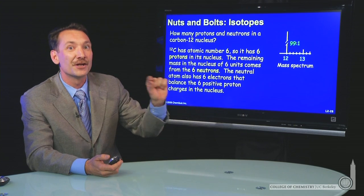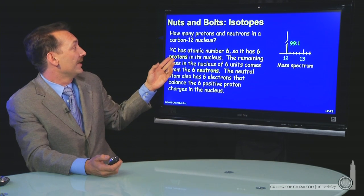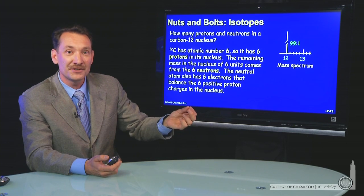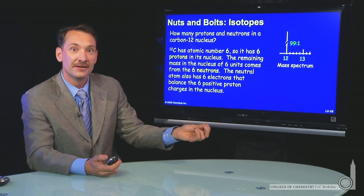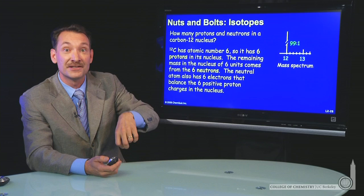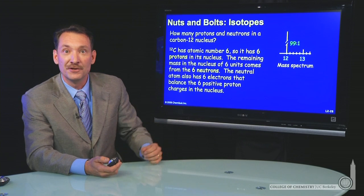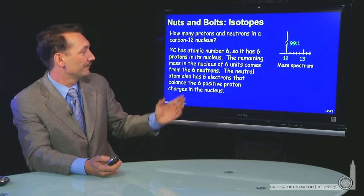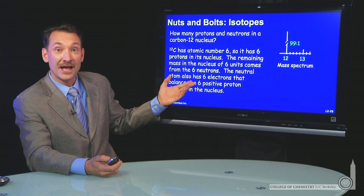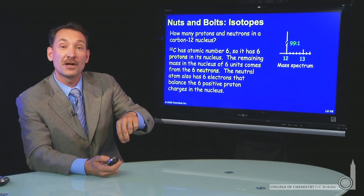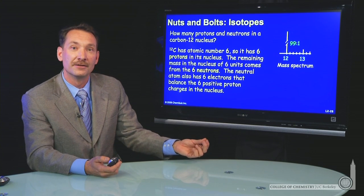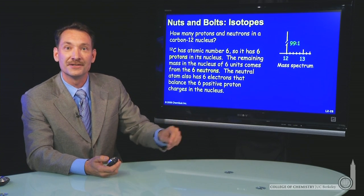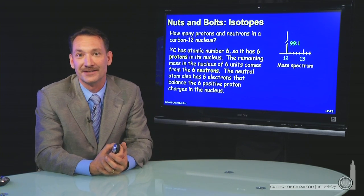Not the mass — the number of protons. Carbon-12 has mass 12, and with six protons accounting for six mass units, there are six more mass units, which must be the neutrons. So there are six neutrons in the carbon-12 nucleus. And if it's a neutral atom, there needs to be one electron for every proton — so six protons, six neutrons, and six electrons in a carbon-12 atom.